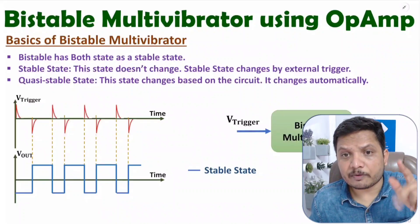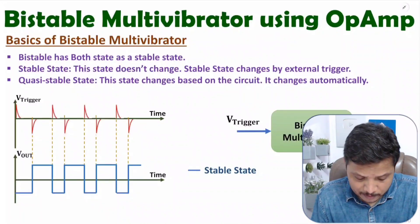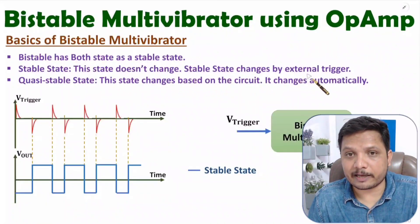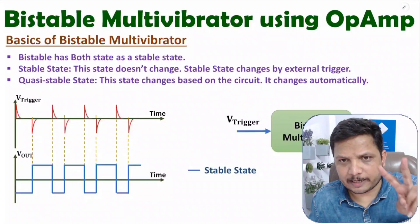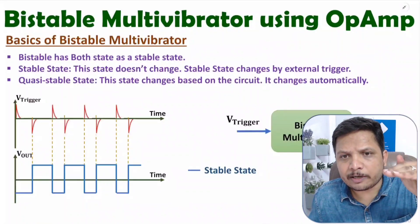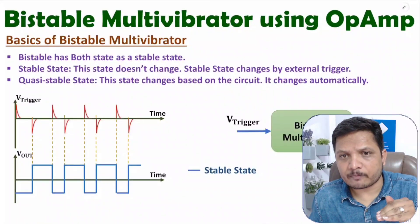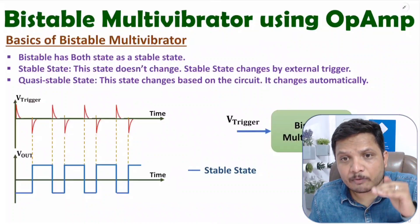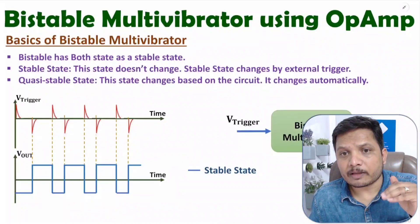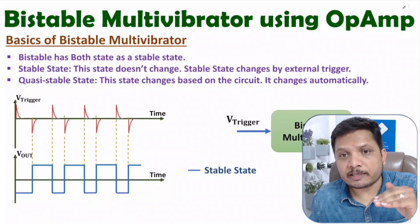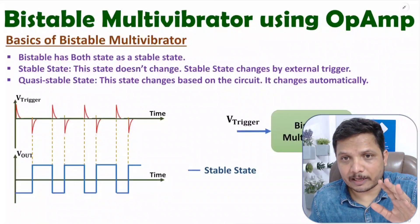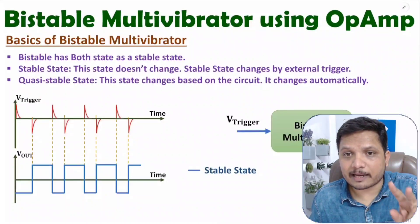To change the state, we need to give a trigger pulse. Stable state means that state doesn't change; to change that state, we need to give an external trigger. We have two states: positive V voltage and negative V voltage. In bistable, positive voltage to negative voltage transition can be done by trigger pulse, and from negative voltage to positive voltage, transition can be done by trigger pulse only. That's why both states are stable states.